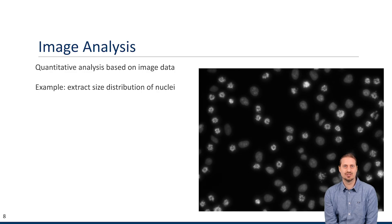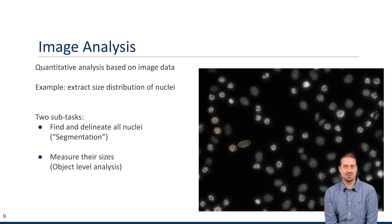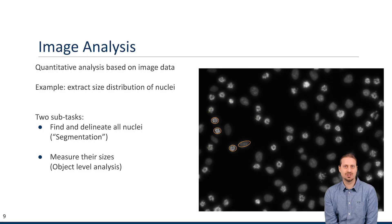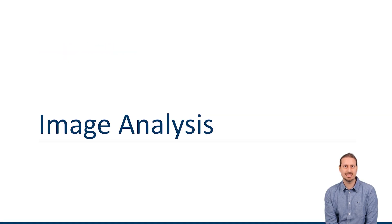Now we can discuss image analysis — what we do to analyze images. Our goal is to ask quantitative questions about the image. A fairly simple example would be to extract the size distribution of nuclei. We can divide this into two subtasks: first, find all the individual nuclei — essentially these orange outlines, which we call a segmentation task. Once we have this, we compute the size, basically the number of pixels for each object found, and analyze the distribution.